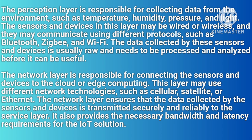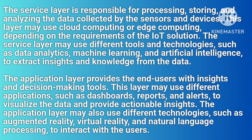The network layer is responsible for connecting the sensors and devices to the cloud or edge computing. This layer may use different network technologies such as cellular, satellite, or Ethernet. The network layer ensures that the data collected by the sensors and devices is transmitted securely and reliably to the service layer. It also provides the necessary bandwidth and latency requirements for the IoT solution.